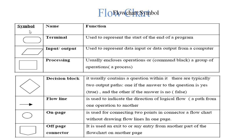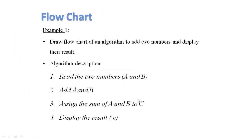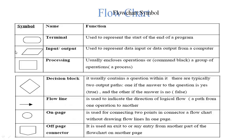Flowchart symbols: a terminal symbol represents the start or end of the program. An input-output symbol is used to represent data input or data output from the computer. A processing symbol represents a group of operations or processes, such as calculations or commands.